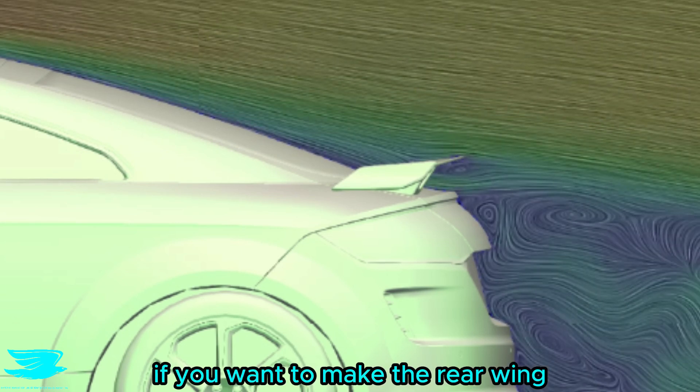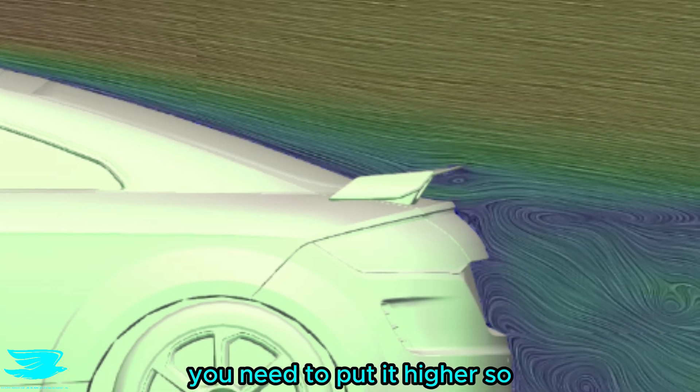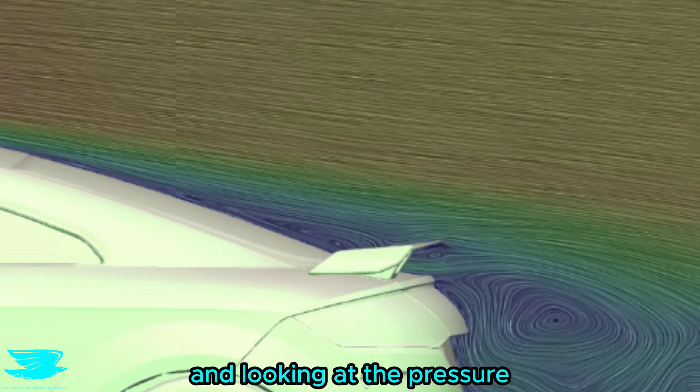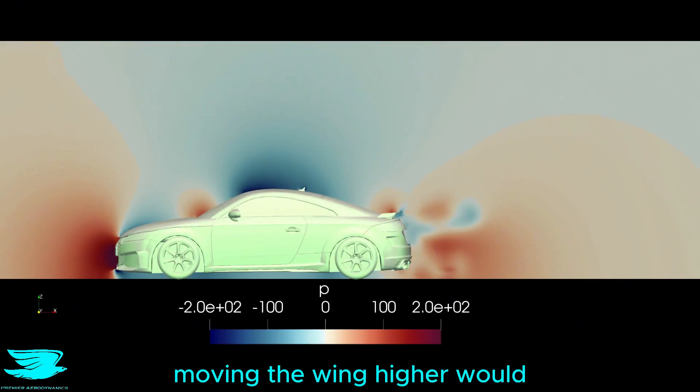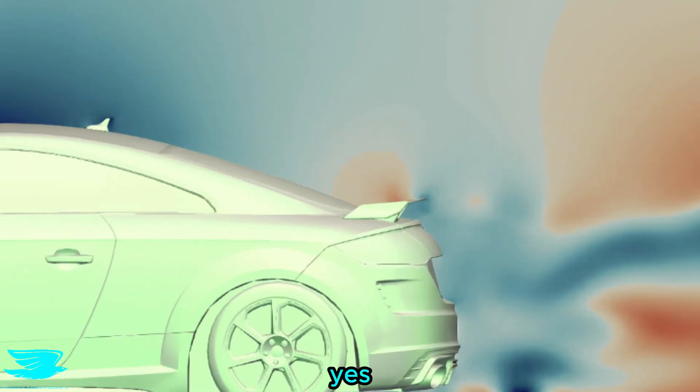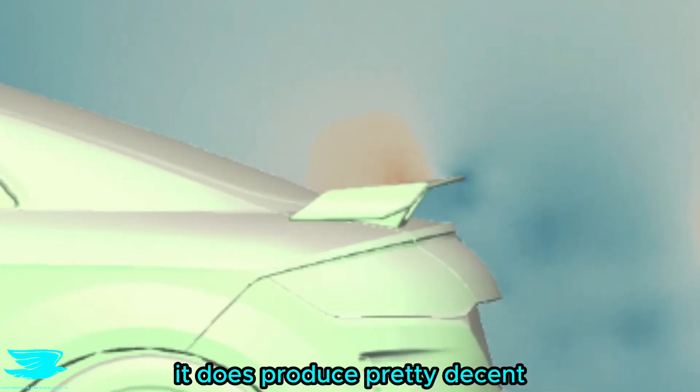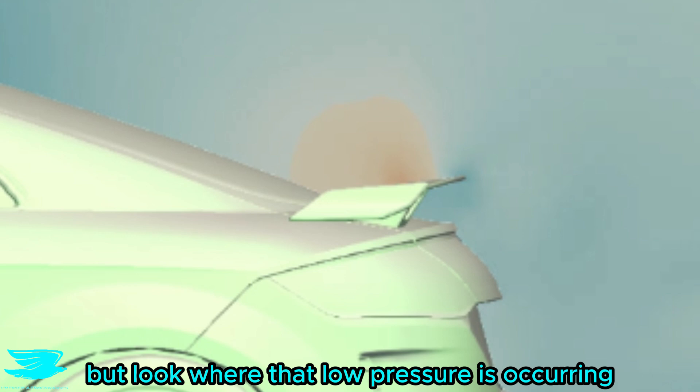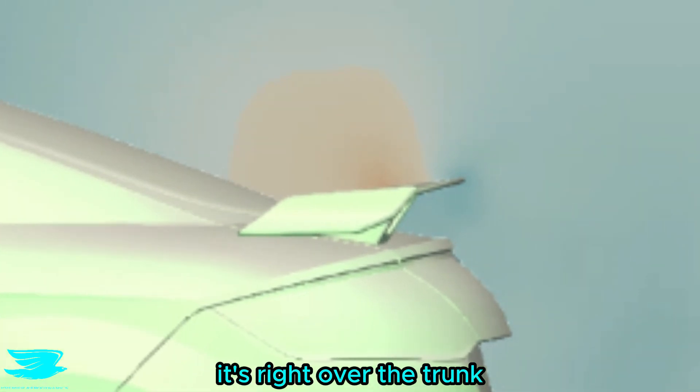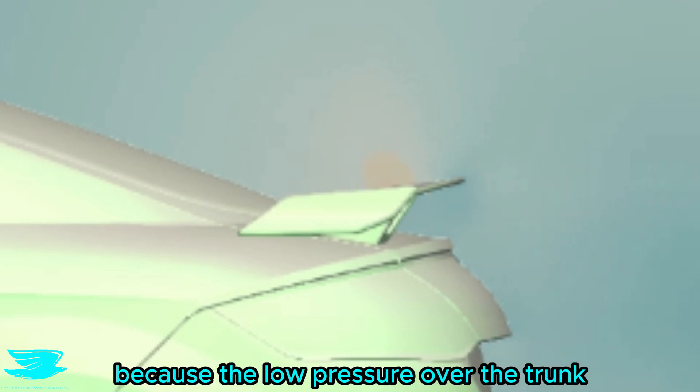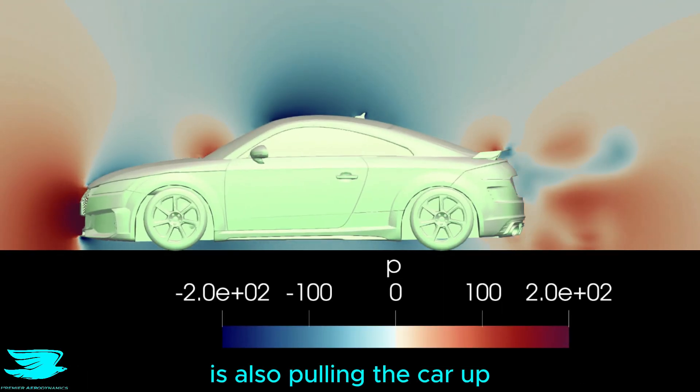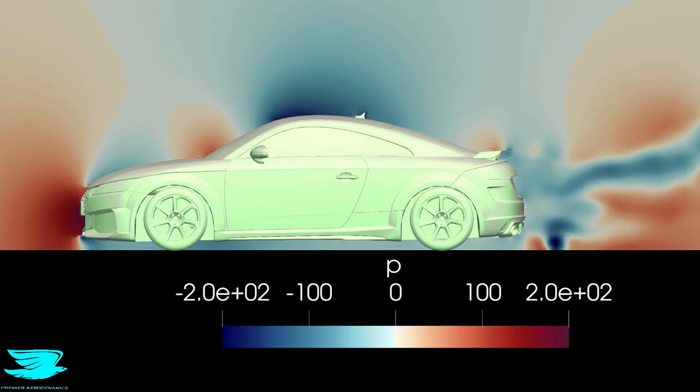If you want to make the rear wing produce more downforce, you need to put it higher so that it sees faster flow. And looking at the pressure, moving the wing higher would also benefit the TT because, as we can see, yes, it does produce pretty decent low pressure underneath, but, look where that low pressure is occurring. It's right over the trunk. So that cancels out some of the downforce from the rear wing because the low pressure over the trunk is also pulling the car up, i.e. lift. So while the TT does look good, its aero is a little botched.